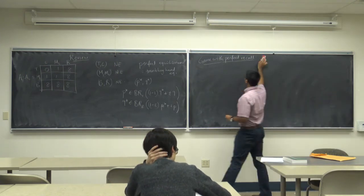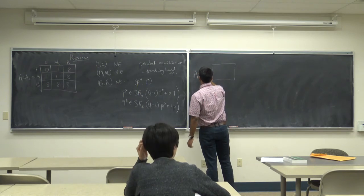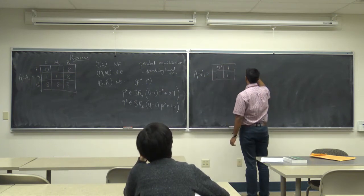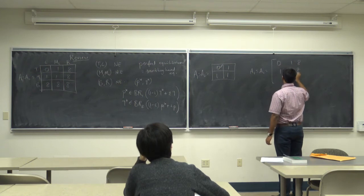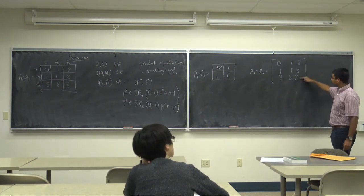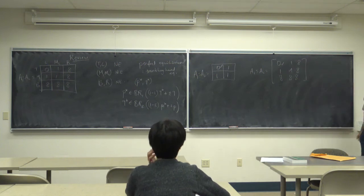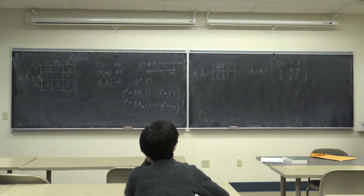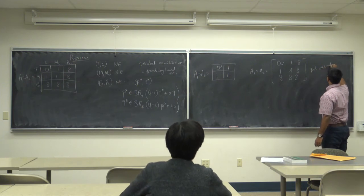There is a problem with perfect equilibrium: if you add completely dominated rows and columns to the game, the set of perfect equilibria changes — that is an undesirable property. For example, starting with A1 = A2 = [0,1;1,1], the perfect equilibrium is (T,L). If you add strictly dominated rows and columns to get a larger matrix with entries like 0,1,8,1,1,8,8,8,8, you find both (T,L) and another action profile become perfect equilibria. This is not desirable since we have not changed the fundamental nature of the game.